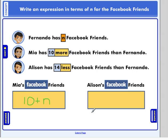How about Allison? We're saying that Fernando has n, but Allison has 14 less than that. So whatever Fernando's number is, n, we have to subtract 14. And here is an expression, n minus 14. This expression represents how many Facebook friends Allison has.